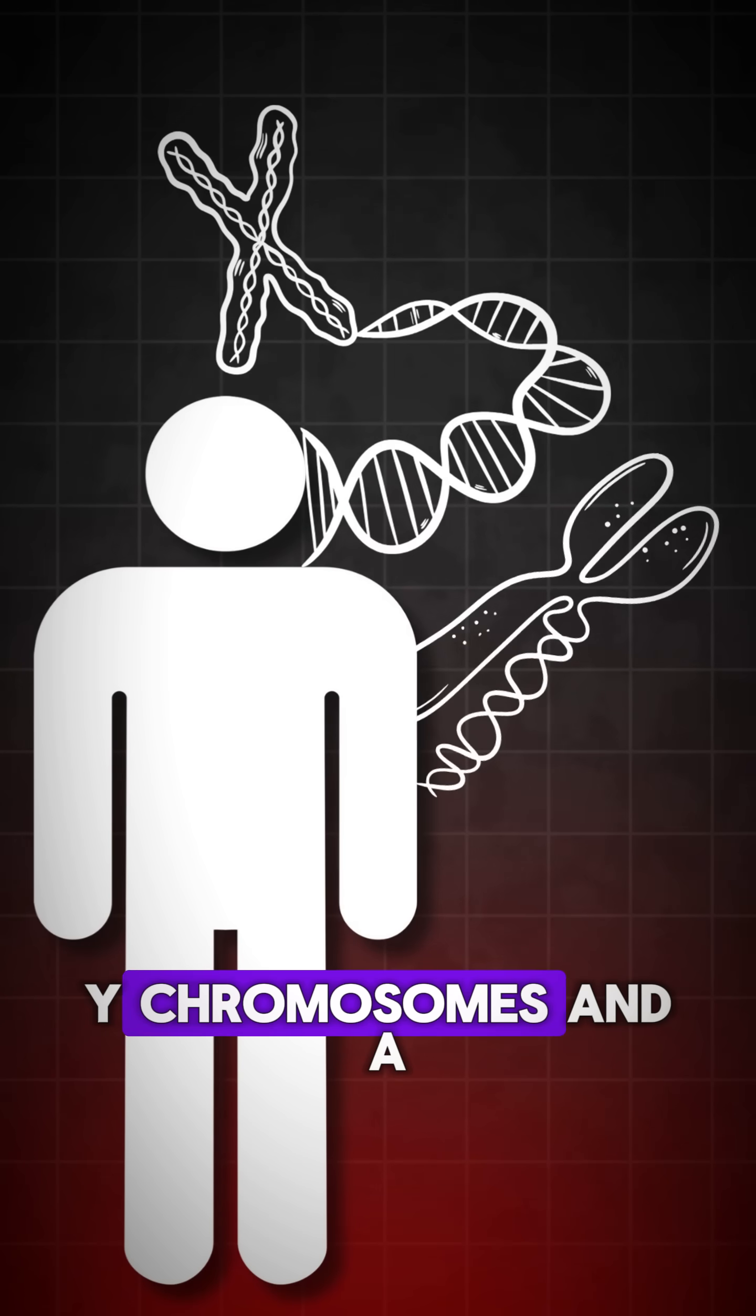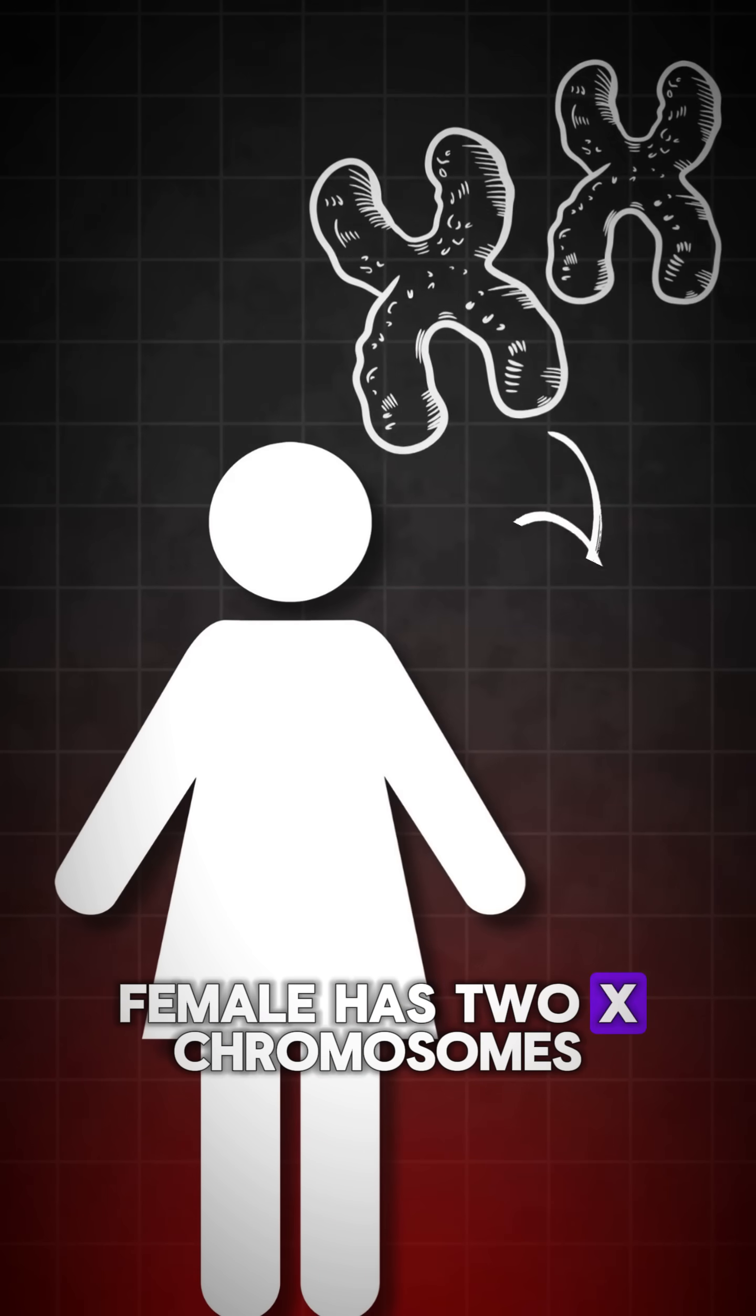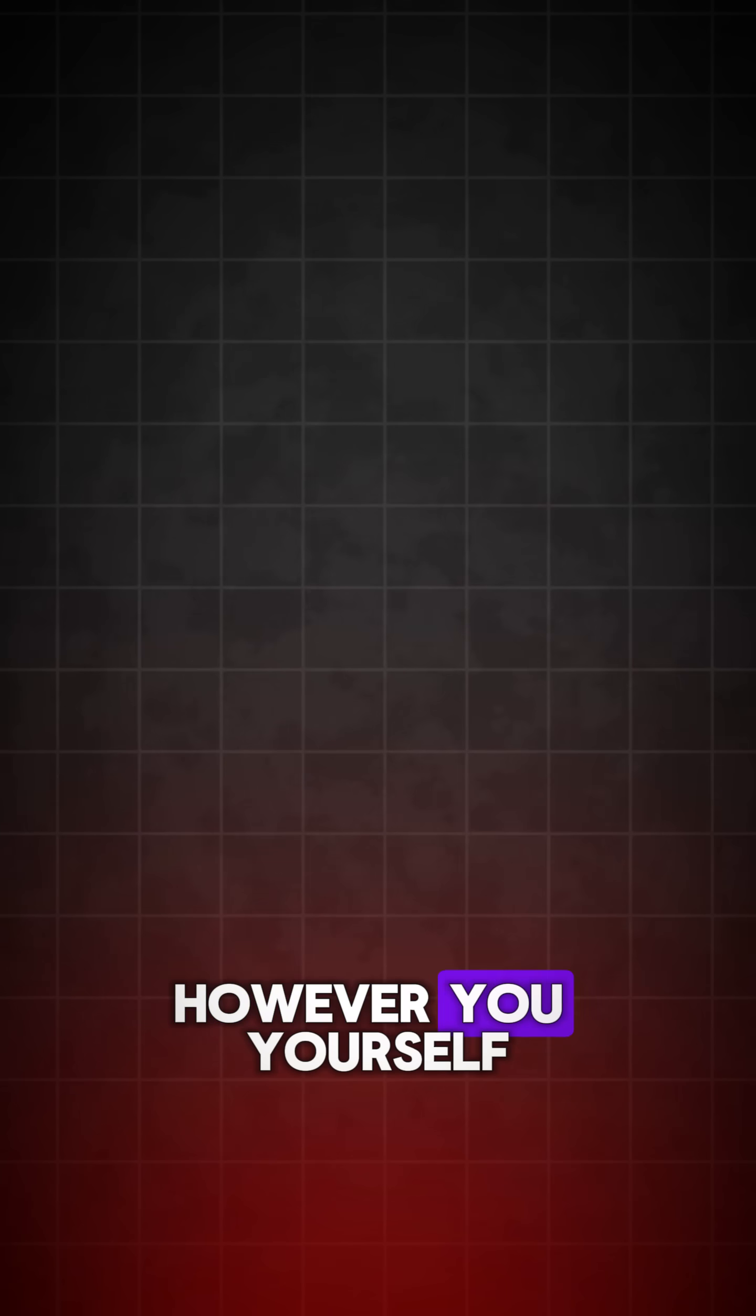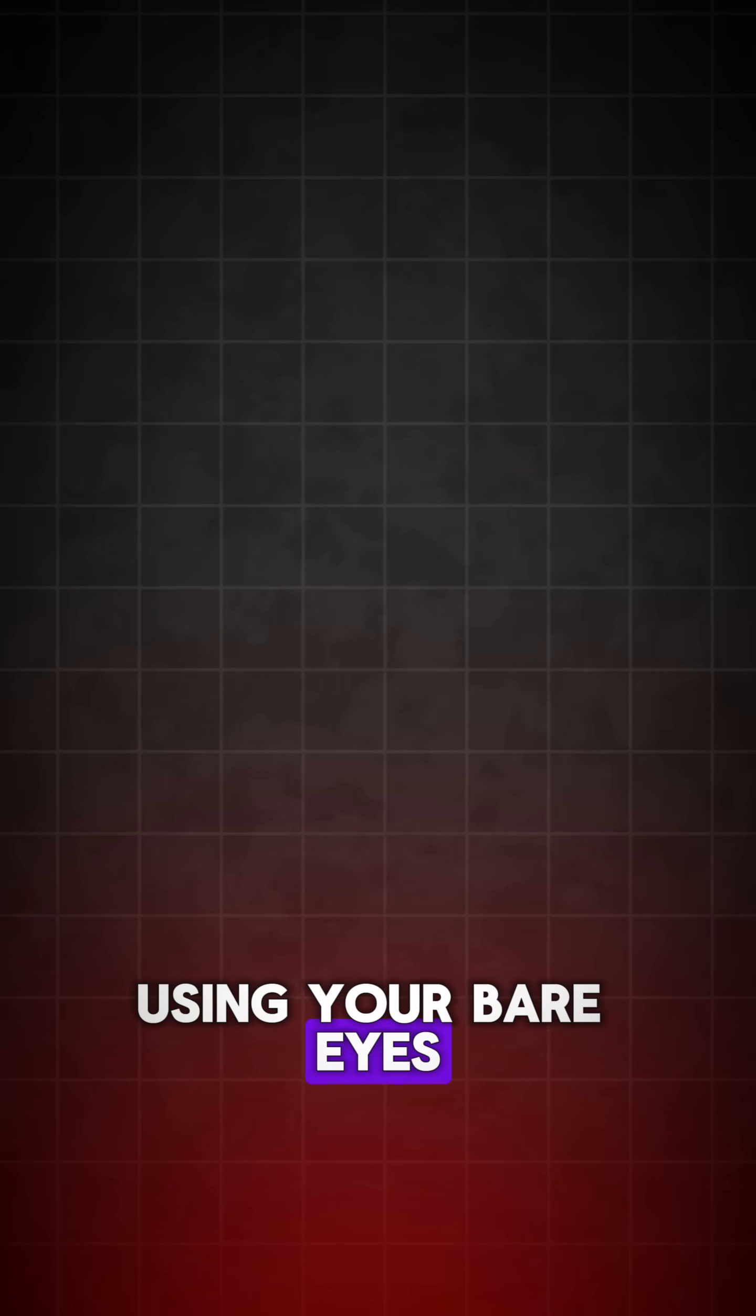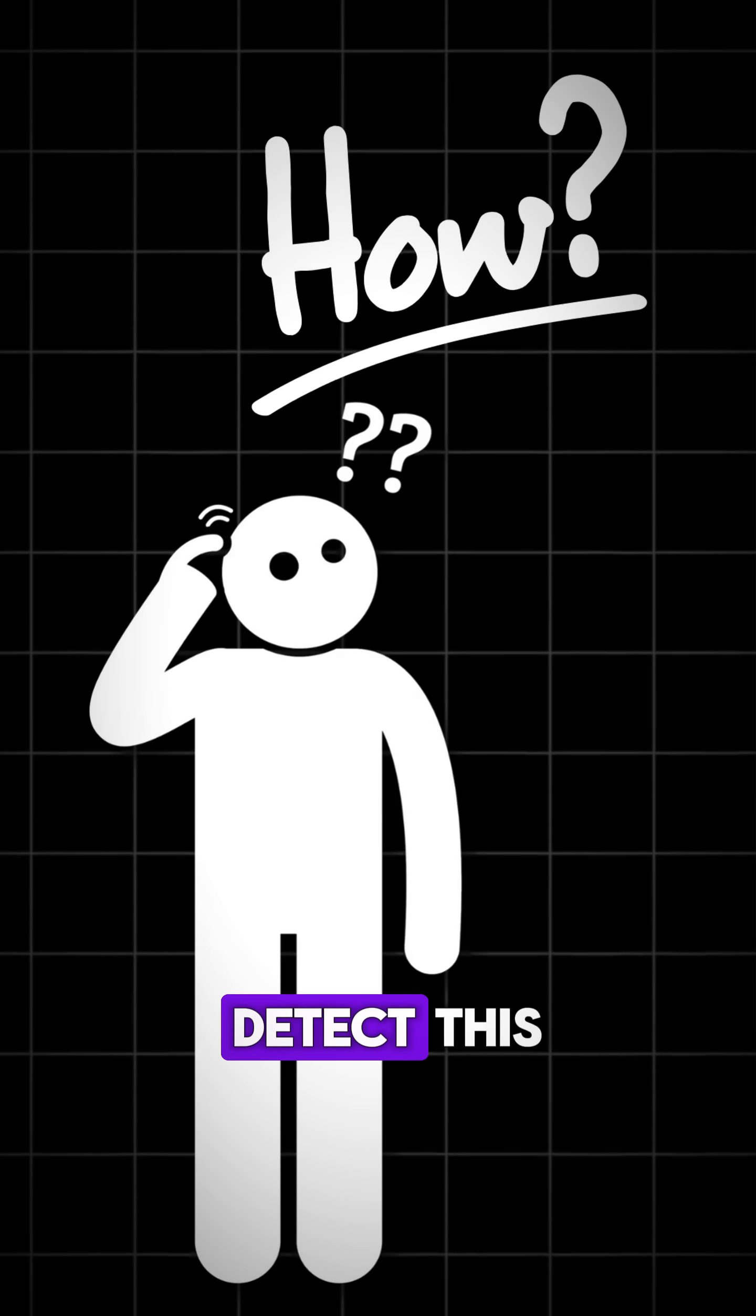A male has XY chromosomes and a female has two X chromosomes. However, you yourself can tell whether a skeleton is male or female using your bare eyes. So, how can you detect this?